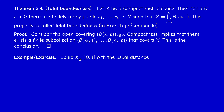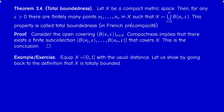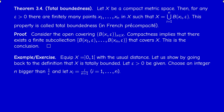Let us check directly from the definition that the interval [0,1] with the usual distance is totally bounded. Pick a positive epsilon and choose an integer n strictly bigger than 1/epsilon. Divide the interval [0,1] into points 1/(n+1), 2/(n+1), and so on until n/(n+1).